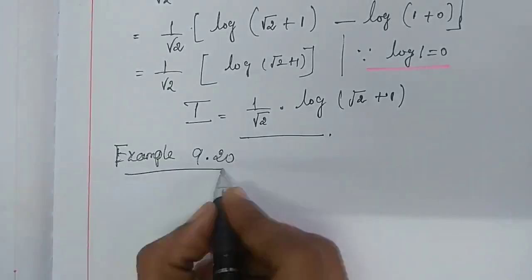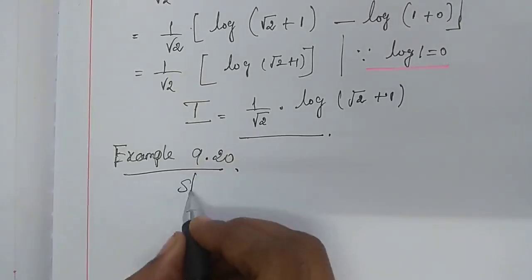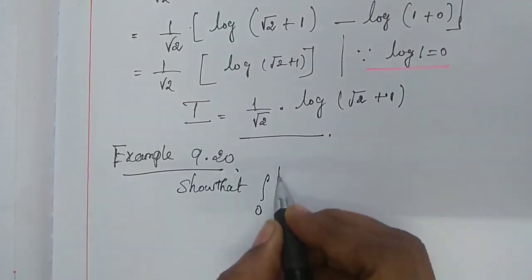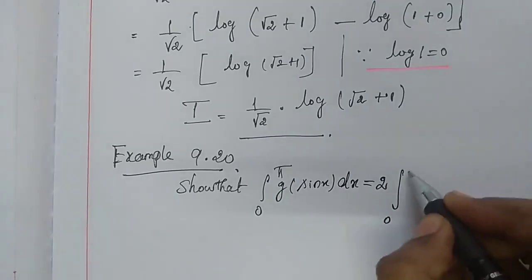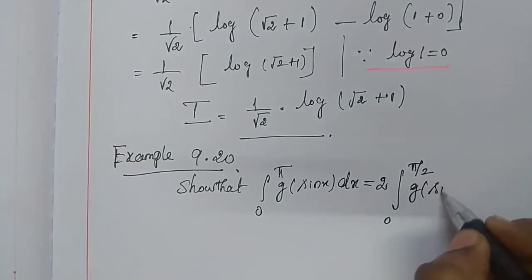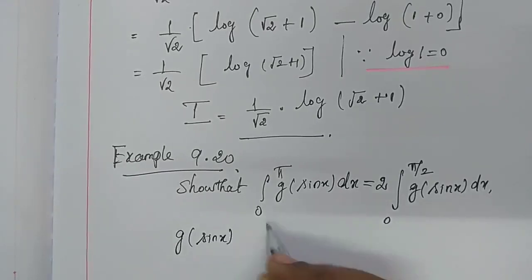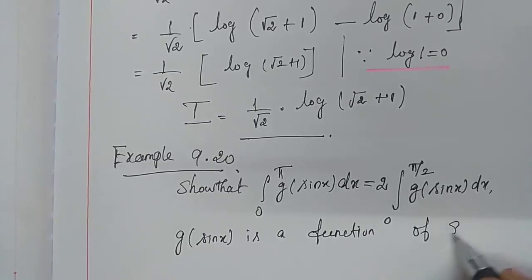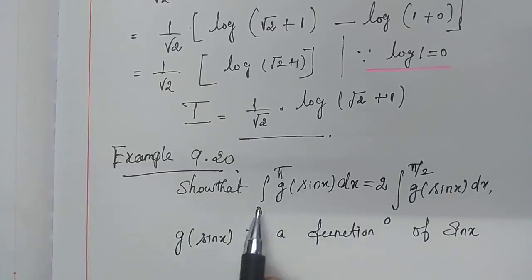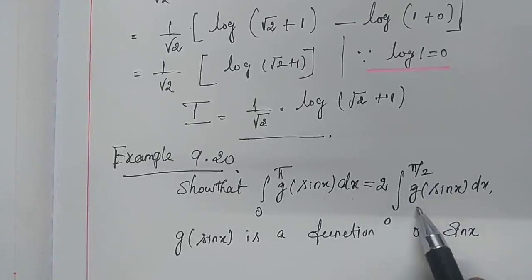Example 9.20: Show that ∫₀^π g(sin x) dx = 2 × ∫₀^(π/2) g(sin x) dx, where g(sin x) is a function of sin x.